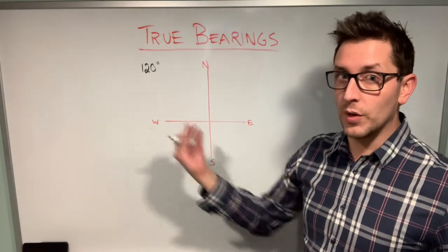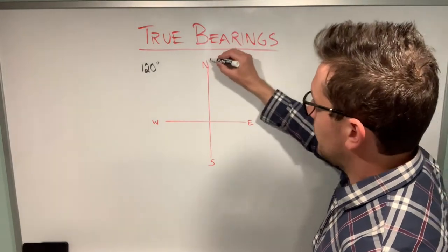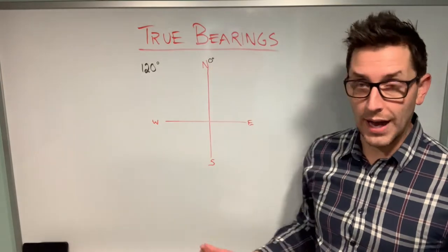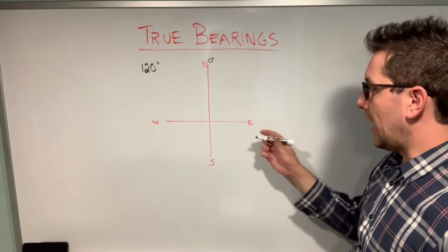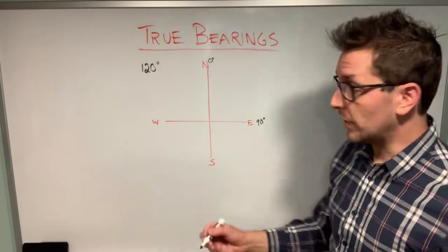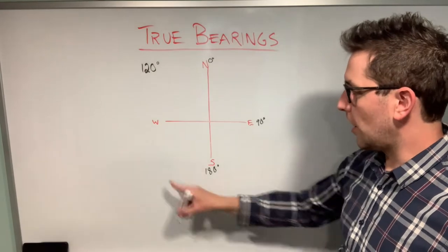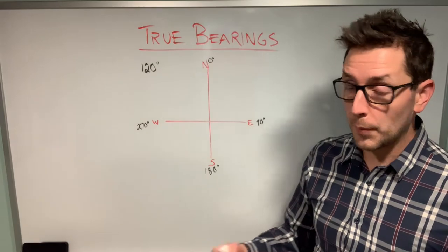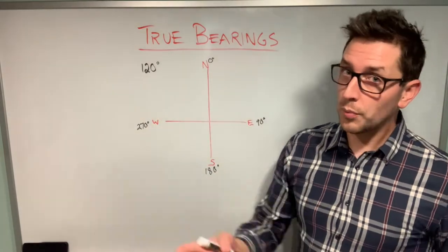Think of north as zero degrees — that's where we start. Since the axes intersect at 90-degree angles, the eastern axis is 90 degrees. Going another 90 degrees puts us at 180 degrees on the southern axis, and another 90 degrees gives us 270 degrees. Remember, a full circle is 360 degrees, and that'll be important in our examples.